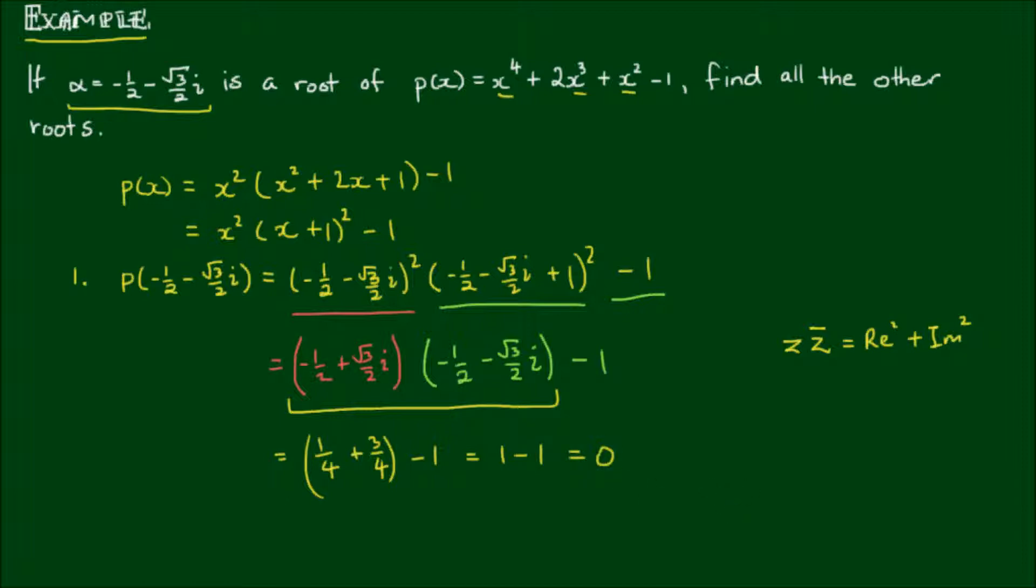So therefore α = 1/2 - √3/2i is a root of P(x). And then by the complex conjugate root theorem, we can say that β = 1/2 + √3/2i is also a root. So β is simply equal to ᾱ. And it is also a root of P(x).